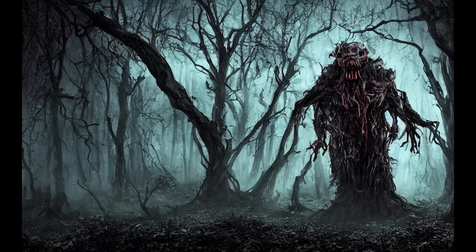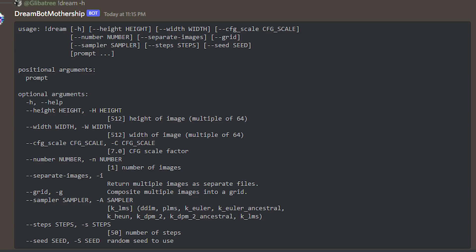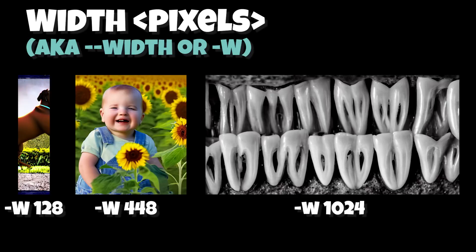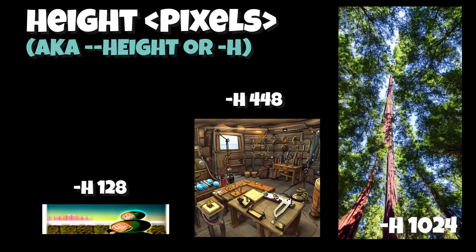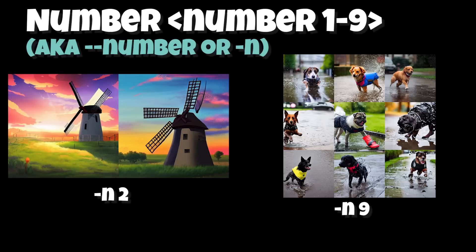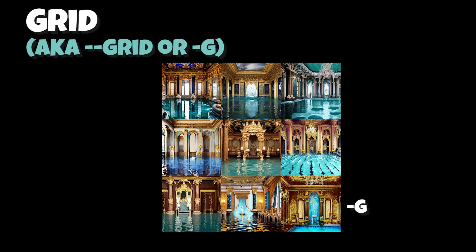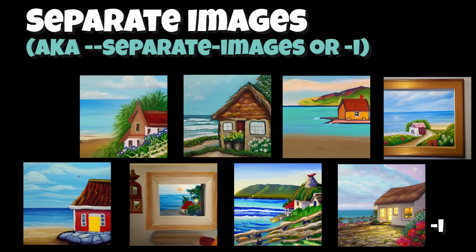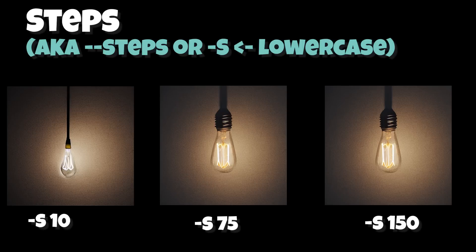Besides the text prompt, there are a couple of arguments you can put inside the command to control the image. Width controls the width of the image — keep in mind there is a max of 1024 pixels and it only works in 64 pixel increments. Height works exactly the same way but for the height of the image. Number lets you pick how many images you want to generate, between 1 and 9. Grid makes those images show up as a single grid, and separate images makes them show up individually. Steps lets you enter a number between 10 and 150 and controls how long the model computes to try to make the image better — similar to steps in Disco Diffusion and a bit like quality in Midjourney.